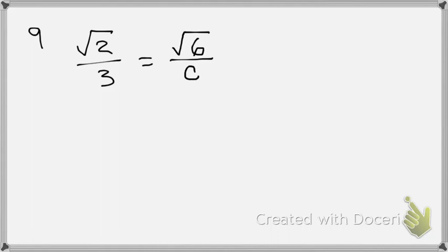All right. Now, how do I solve my proportion, Brantley? Garrett, how do I solve a proportion? Cross multiply. Cross multiply. Cross multiply. Good job, Mrs. Cheney. Well done. So root 2 times C equals what? So root 2 C equals, what's 3 times root 6?